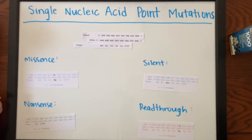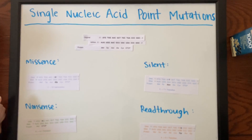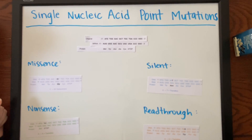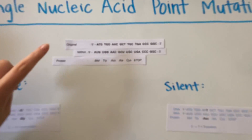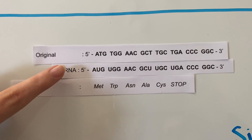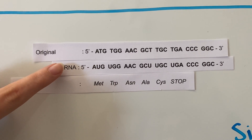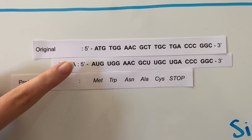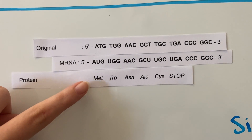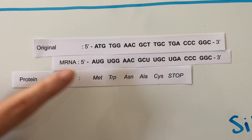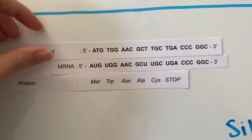This video displays single nucleic acid point mutations. Here we are given the original sequence of DNA, which we translated into RNA, and from this RNA we are able to discover which proteins this string of DNA will code for.